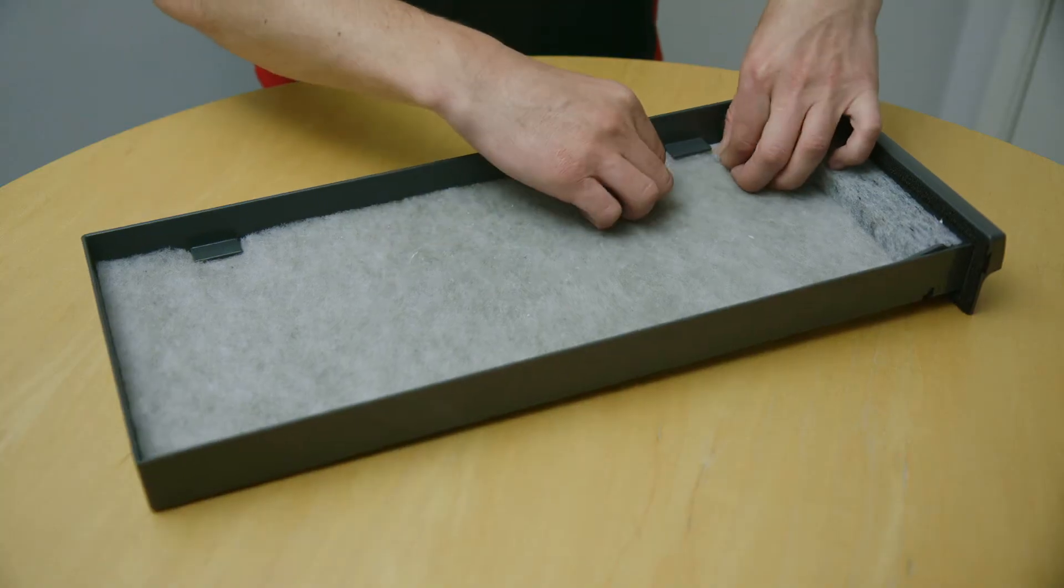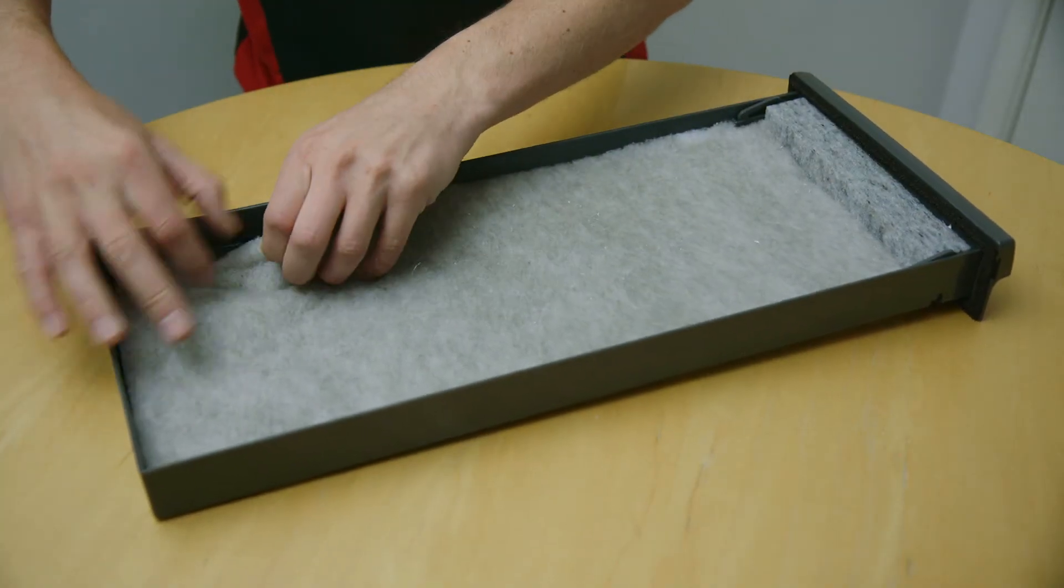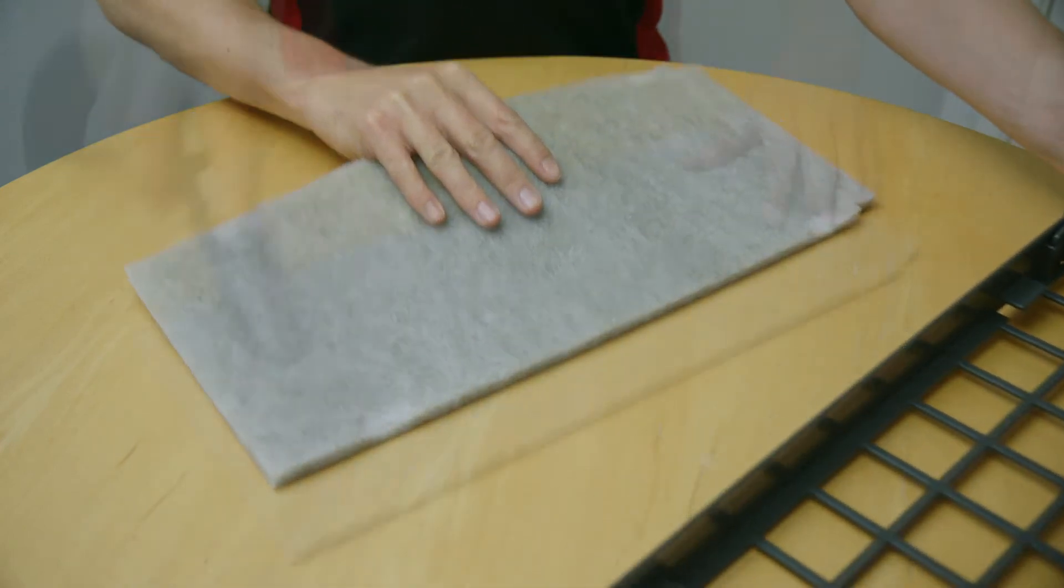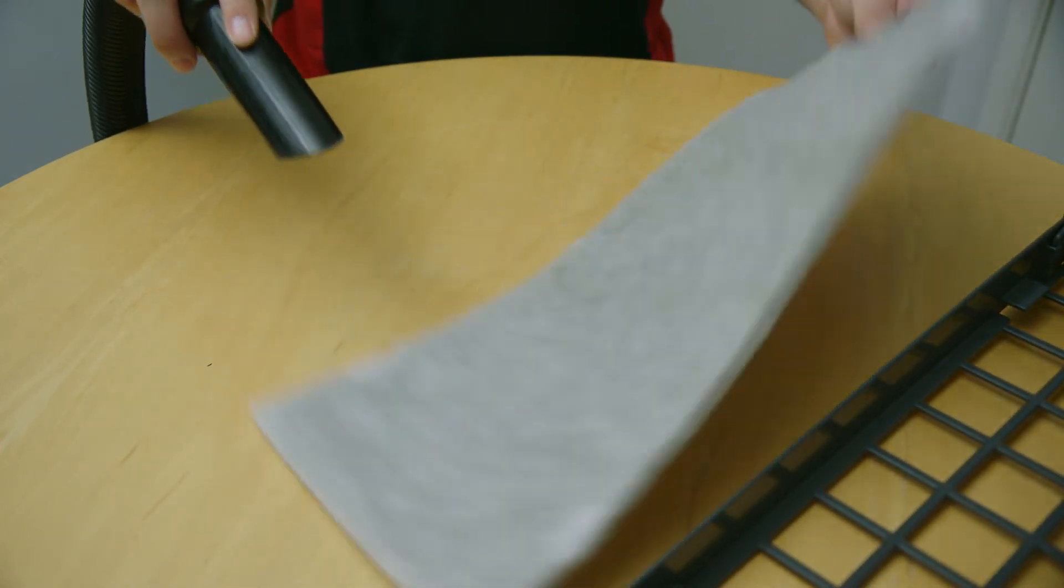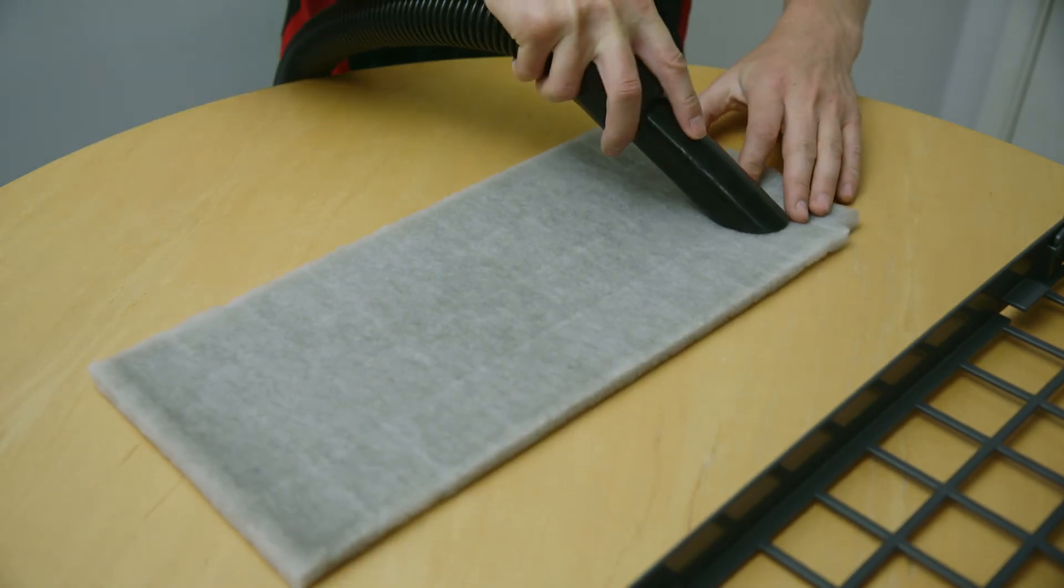Carefully remove the filter membrane from the filter frame and use a vacuum cleaner to remove dirt, dust and particles from both sides of the membrane.